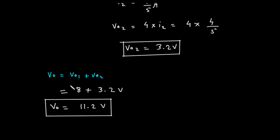Step 3: Finding the total voltage V0. The final step in the superposition method is to add the individual results together. V0 equals V01 plus V02. Substituting the values we found: V0 equals 8 volts plus 3.2 volts. Adding these together, we get the final answer: V0 equals 11.2 volts.